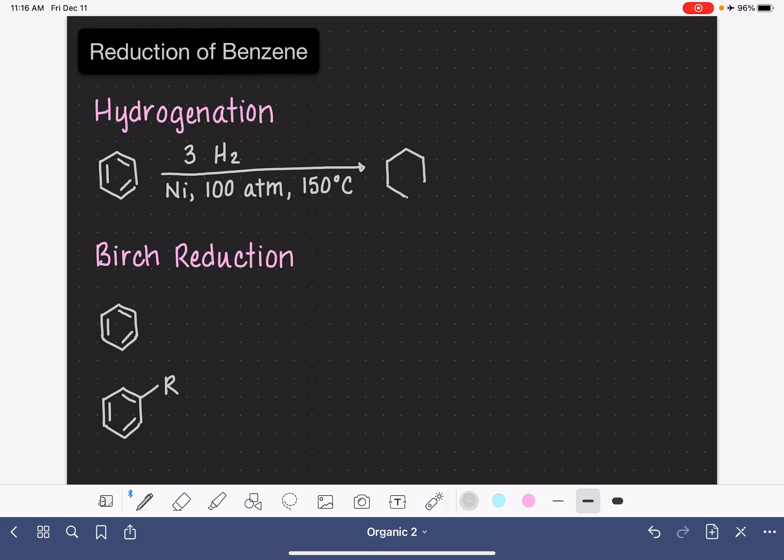This converts benzene to cyclohexane. The Birch reduction reaction is not as harsh, but it also does not provide a complete reduction.